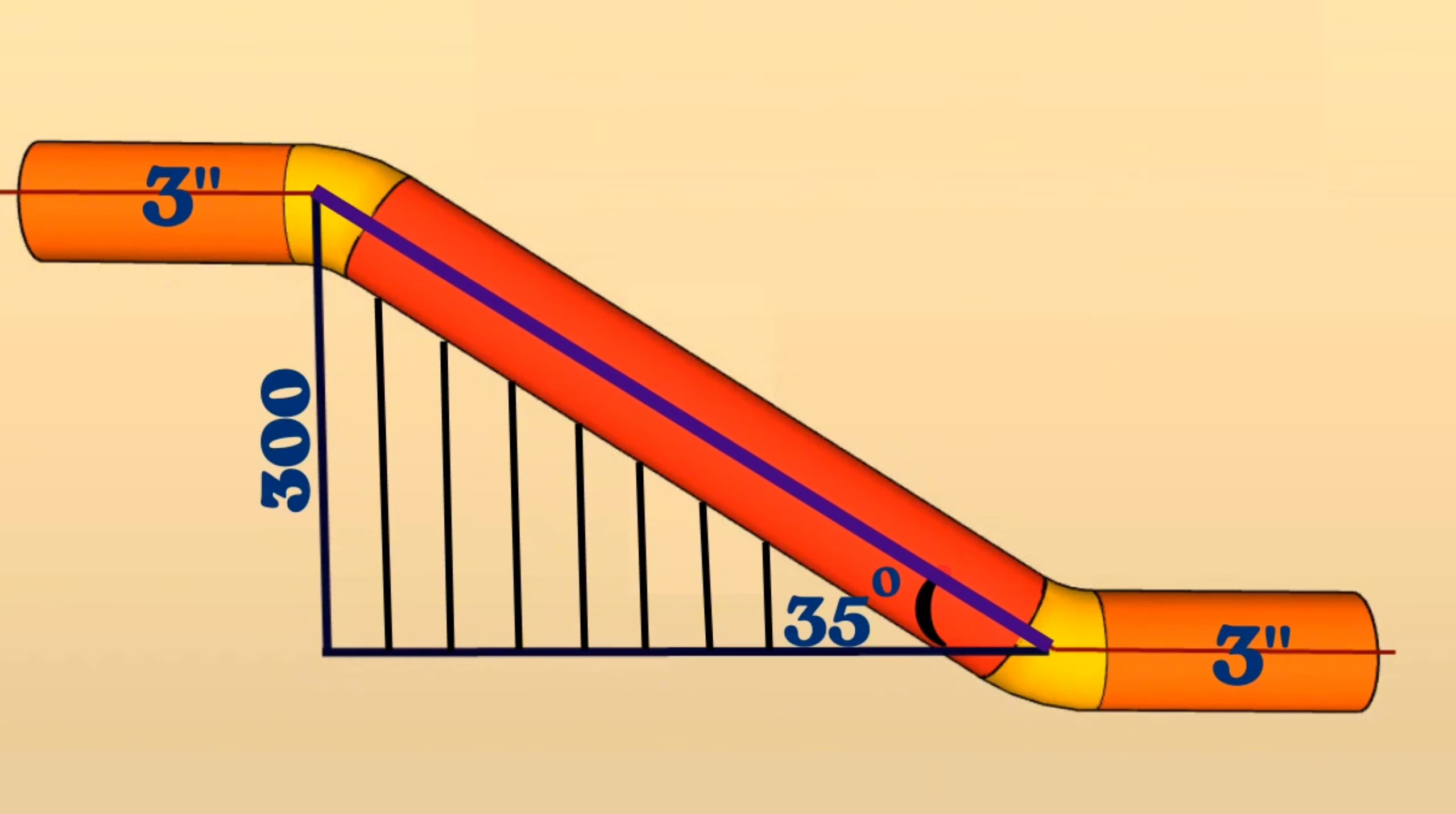Let's mark the hypotenuse of this right angle triangle with the letter H. In this situation the hypotenuse of this right angle triangle will be H and the catheter opposite the 35 degree angle will be 300 millimeters.